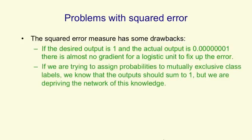Also, if we're trying to assign probabilities to mutually exclusive class labels, we know that the output should sum to one. Any answer in which we say the probability that it's an A is 3 quarters and the probability that it's a B is also 3 quarters is just a crazy answer. And we ought to tell the network that information. We shouldn't deprive it of the knowledge that these are mutually exclusive answers.